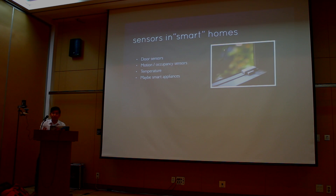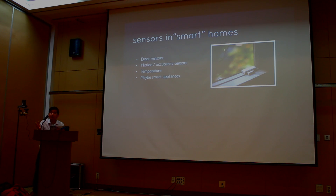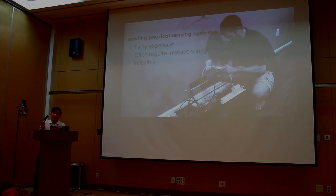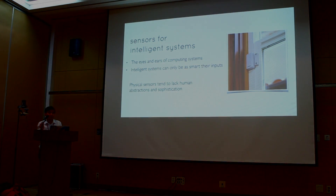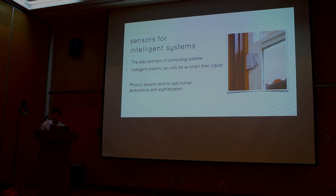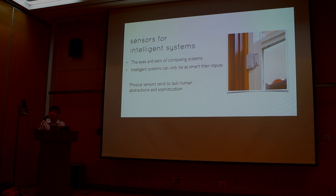Sensors are starting to appear in a range of environments, including the home. There are tons of conventional physical sensors around. Traditionally, you use these sensors by attaching them to windows and doors as a way to infer what's going on. However, existing physical systems can be fairly expensive, often inflexible, and often require running wires around. The problem with these physical sensors is that the output is really basic — all you know is that the door is open or closed. Unless your question is exactly what the sensor captures, there's no way to ask more sophisticated questions.